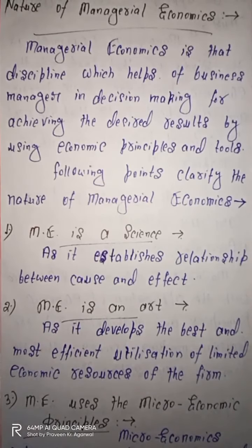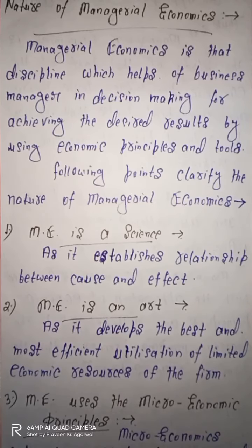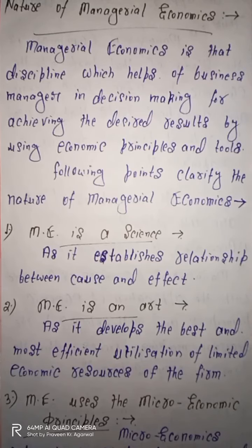Second nature: ME is an art. Art का basic feature होता है कि यह resources को best possible या efficient way में utilize करती है। जो भी आपके पास limited economic resources होते हैं, managerial economics उनका best and most efficient utilization possible करती है। इसके regarding different type के tools, techniques और principles को form करती है। इसी वजह से हम ME को art की तरह कह सकते हैं।